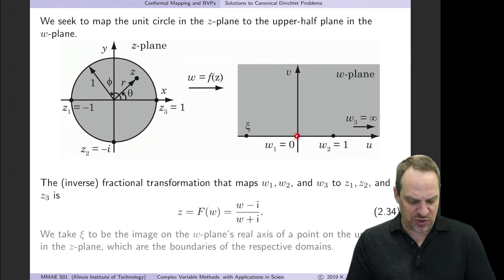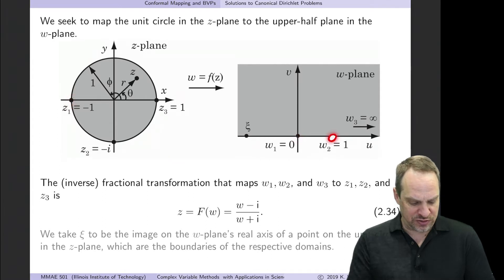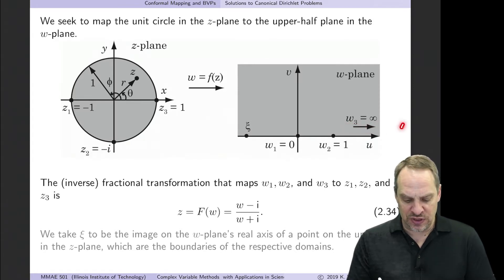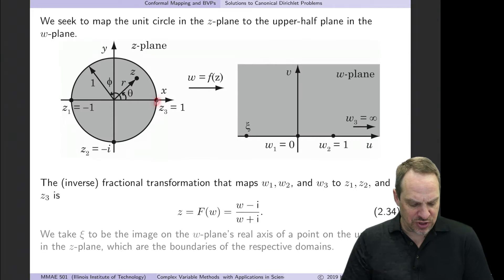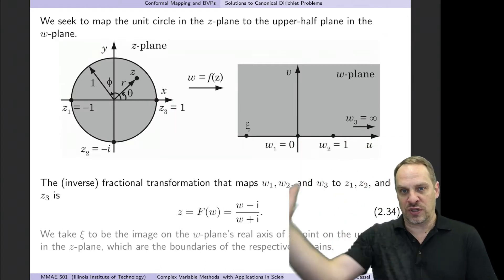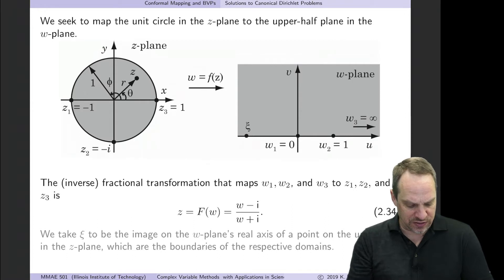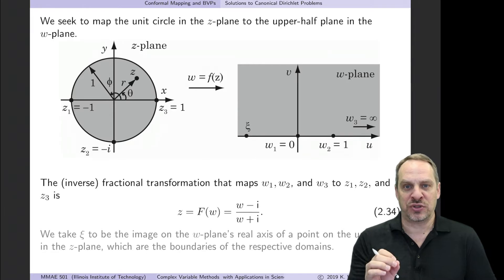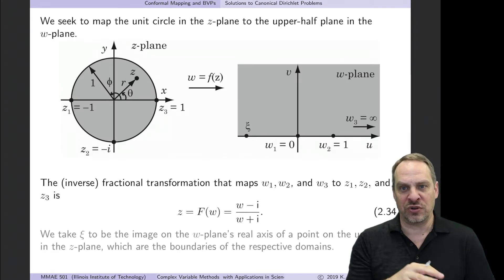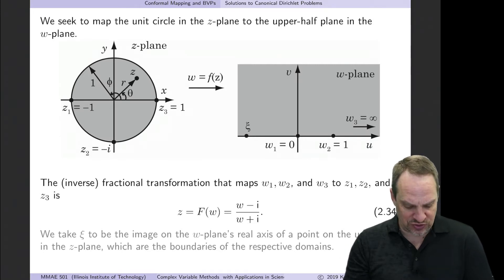We're going to map those to image points: w1 is mapped to the origin, w2 will be at 1, and w3 is going to be at infinity. As always, infinity is everywhere at infinity — positive, negative, everywhere. Essentially what we're doing is opening up the circle at z3, throwing that to infinity so it gets spread throughout infinity. This is not the only mapping that will accomplish the goal of mapping the interior of the unit circle into the upper half plane, but this is the one I've chosen to use.